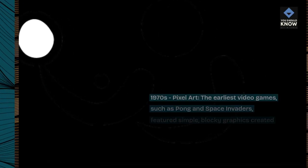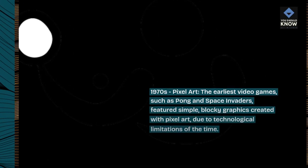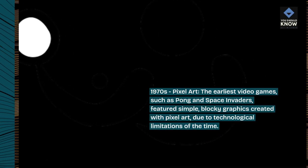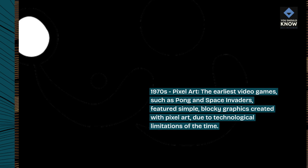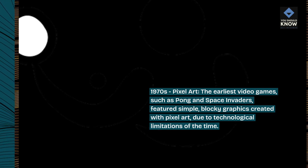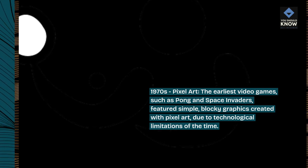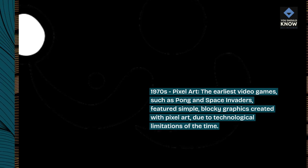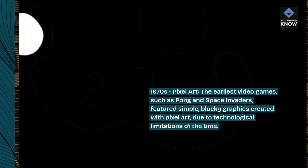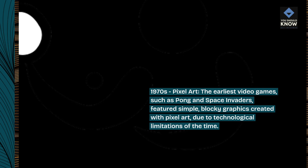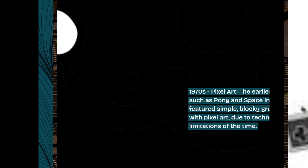1970s — Pixel art. The earliest video games, such as Pong and Space Invaders, featured simple, blocky graphics created with pixel art, due to the technological limitations of the time.